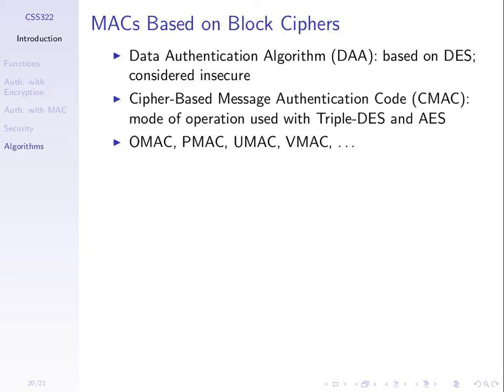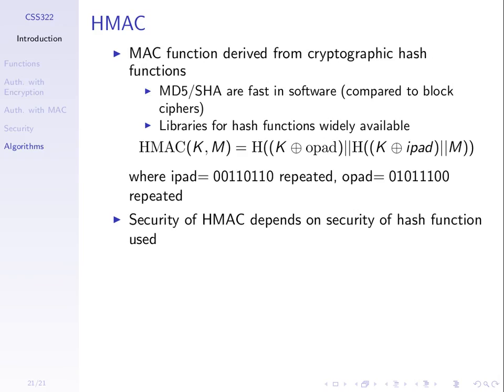There are many different MAC algorithms, though we won't go through any specific one. The next topic is hash functions, which we'll cover next. Hash functions and MAC functions are used for similar things. There is a MAC function called HMAC, which takes an existing hash function and turns it into a MAC function. That's commonly used in network communications — if you capture Secure Shell packets, you'll see HMAC used there.